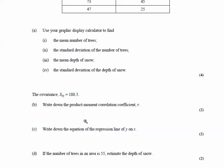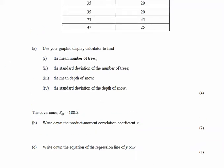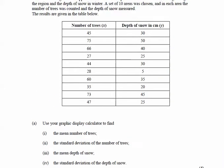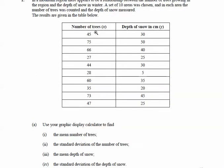The next bit says: write down the equation of the regression line, y on x. Now this is to do with the fact that we've got two variables. A different question might ask you to take this data and draw a scatter diagram for it.